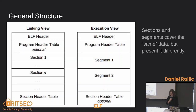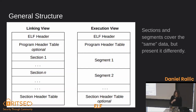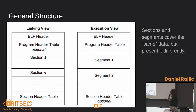This is the general structure of an ELF file. There are two perspectives to look at it from: the linking perspective and the execution perspective. Both perspectives are really just looking at the same kinds of spaces of data, just a different presentation of it. The linking view is for when the thing is getting linked — the program header table is optional there, because it's not necessary for linking. The section header table tells you where all the sections are. Whereas when executing, you need the program header table because it describes the segments which describe how to execute the file.